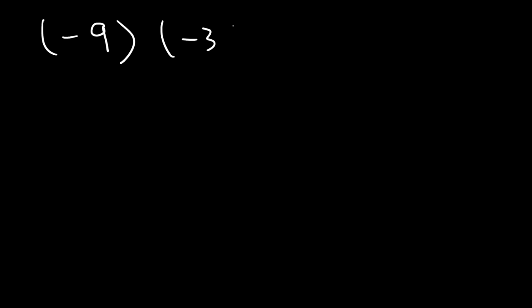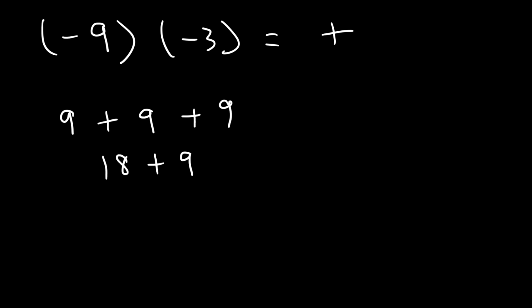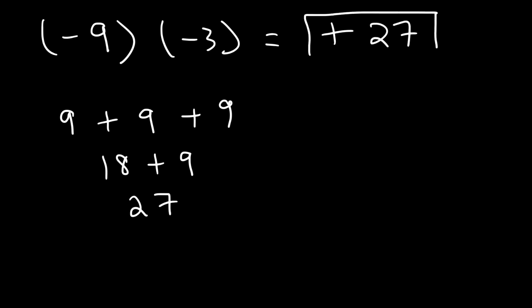Here's another example: what's negative 9 times negative 3? Go ahead and pause the video. Here we have two integers with the same sign, so this will give us a positive answer — a negative times a negative gives a positive. We need to find 9 times 3: 9 plus 9 is 18, and 18 plus 9 is 27. So 9 times 3 is 27, and therefore negative 9 times negative 3 is positive 27.